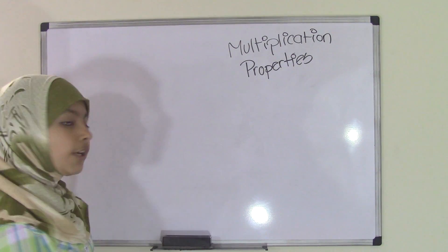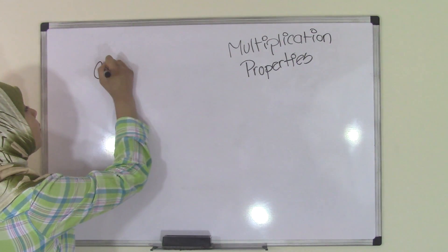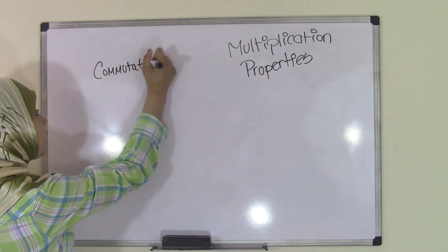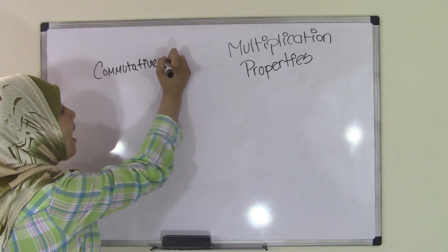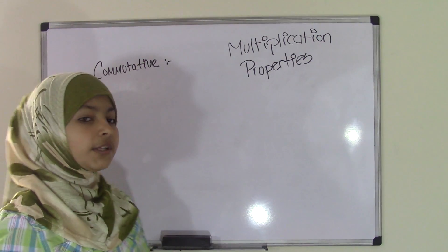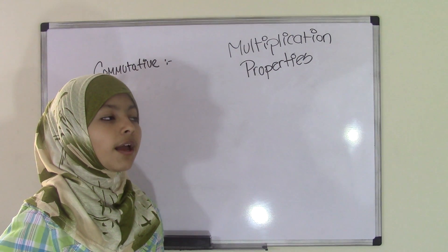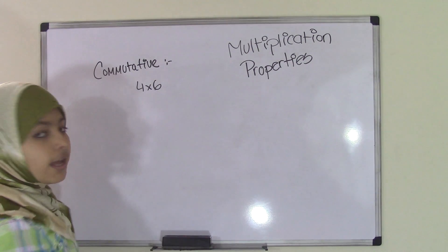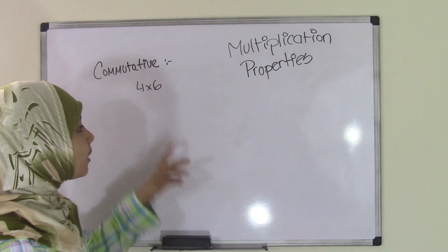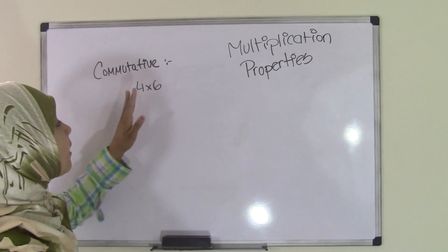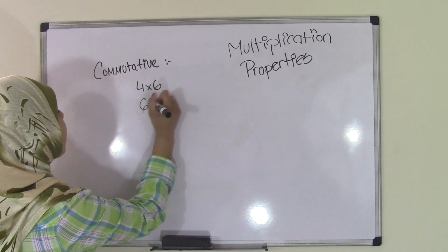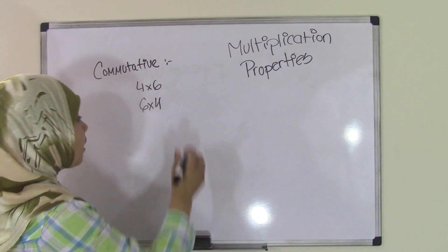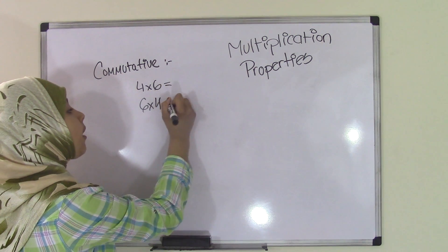So the first property of multiplication is the commutative property. The commutative property is pretty much reverse operations. So let's say you have 4 times 6. In the commutative property, you can switch this around. So you can either write it as 4 times 6 or you can write this as 6 times 4. Either way, it does not matter.